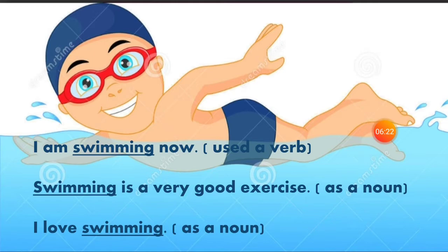In the next sentence, 'I love swimming' — what do you love? Swimming. So 'swimming' is an object here. As I told you, an object answers the question 'what' and 'whom.' Swimming is answering the question 'what' — it is a direct object — and it is also performing the action of a noun. So 'swimming' is a gerund.